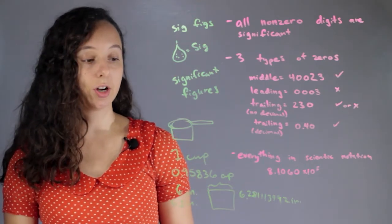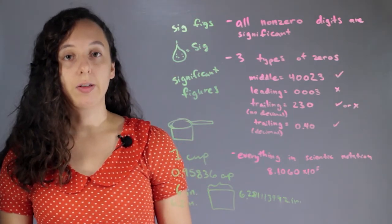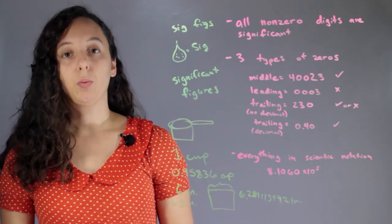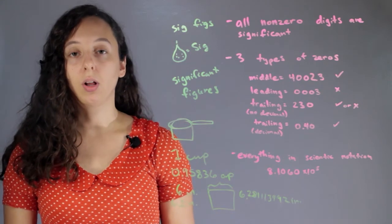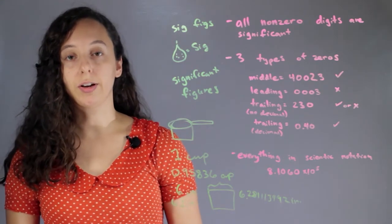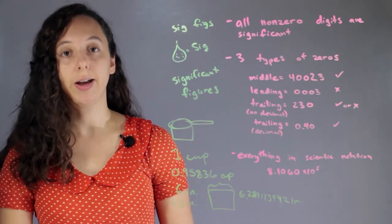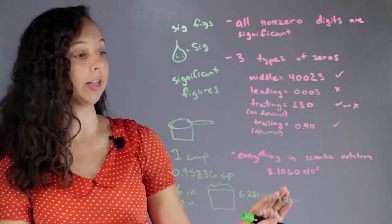So in sig figs, the way that we measure something is we only write down what we definitely know. And so there's a whole summary of rules of how to measure stuff. But let's go into the rules of sig figs themselves.